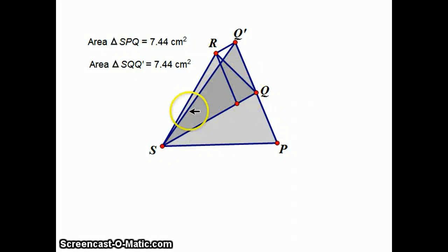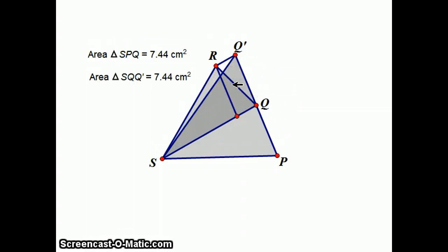Now triangle RQS, I want to show you that that has to have the same area as Q prime QS. And that was actually pretty easy to prove. Those two triangles have the same base. If I think of the base as SQ, both of them have base SQ. But because RQ prime is parallel to SQ, these two triangles have to have the same height. If I drew a perpendicular line from R down to SQ, it would be the same height as the perpendicular line from Q prime to line SQ. So those two triangles have literally the same base, and their heights are the same, because those two lines are parallel. So what that means is that these two triangles have the same area also.